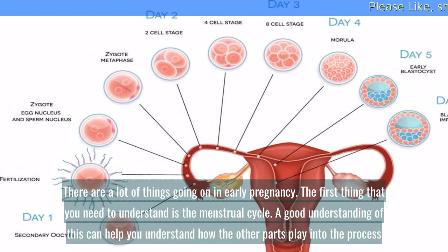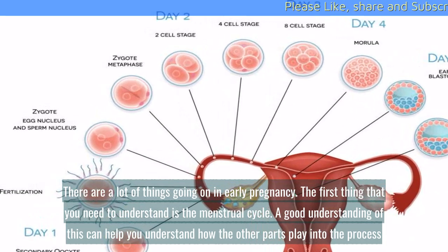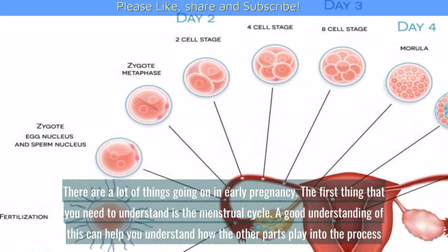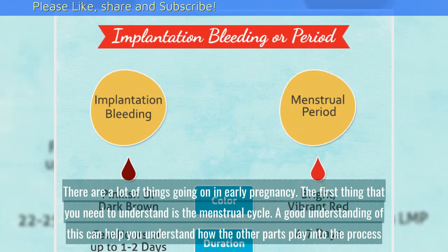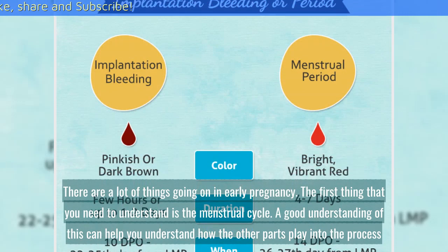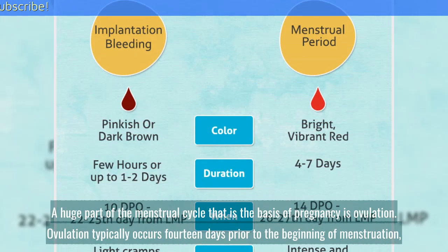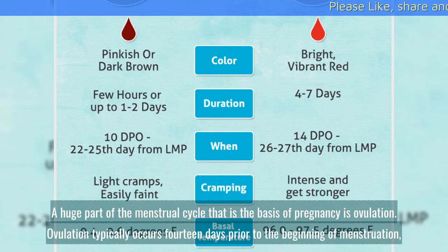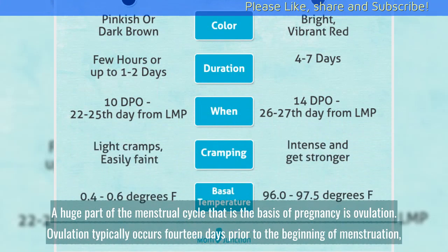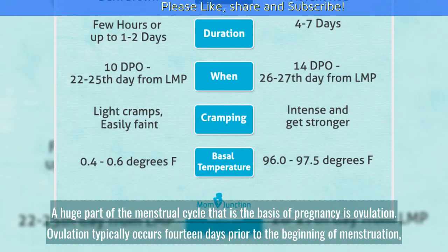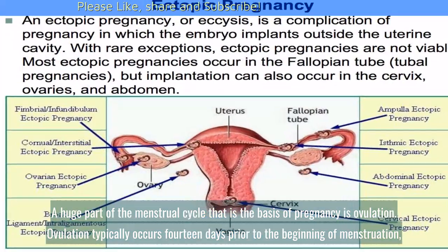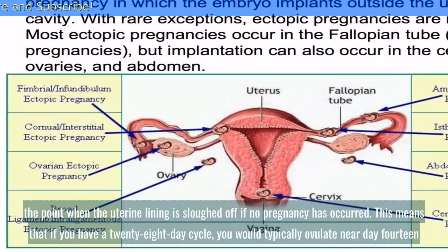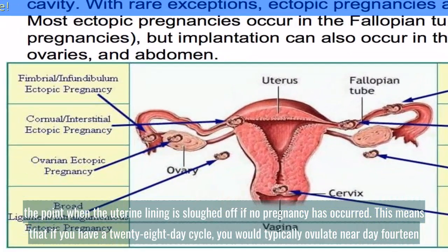There are a lot of things going on in early pregnancy. The first thing that you need to understand is the menstrual cycle. A good understanding of this can help you understand how the other parts play into the process. A huge part of the menstrual cycle that is the basis of pregnancy is ovulation. Ovulation typically occurs 14 days prior to the beginning of menstruation, the point when the uterine lining is shed if no pregnancy has occurred.